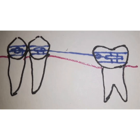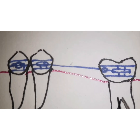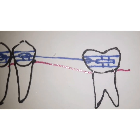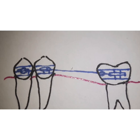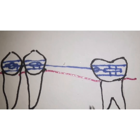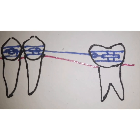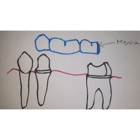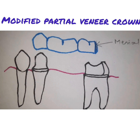If a third molar is present in this situation, once you have uprighted the second molar, you will need to extract the third molar so that you can maintain the molar in an uprighted position and use it as an abutment for your fixed dental prosthesis.